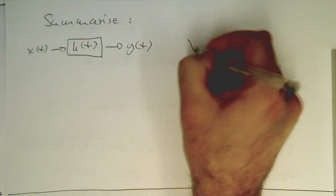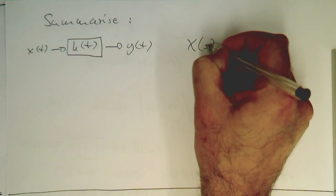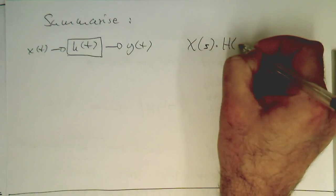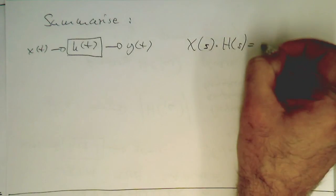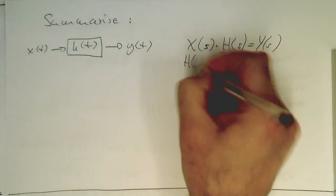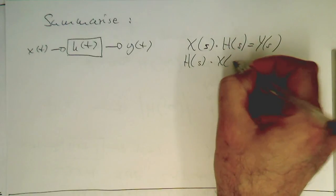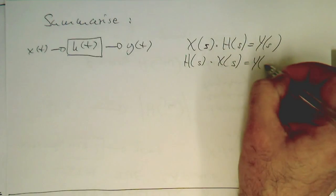then in Laplace space, this is then x of s multiplied by h of s, and this gives us then y of s. Or the other way around, h of s multiplied by x of s gives us y of s.